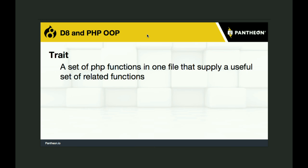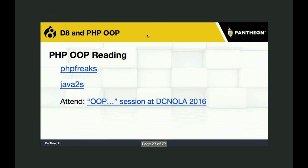A trait — and there are trait files in Drupal — is a group of functions that do a lot of the same thing. They've been conveniently put into a single file so they're organized, and classes can use traits to get the functionality out of them. That is how it is actually done in Drupal.